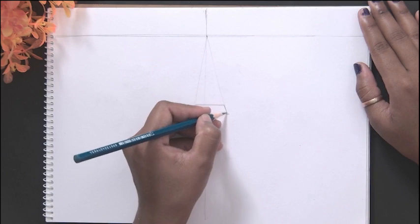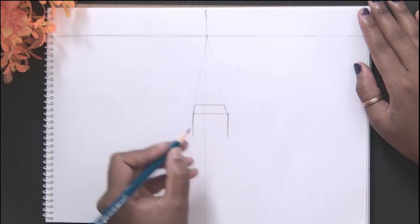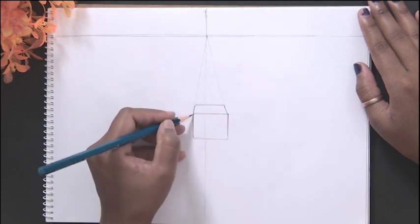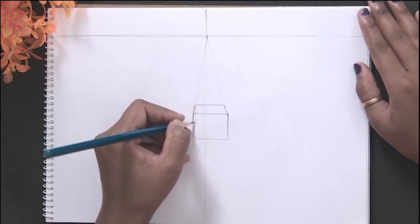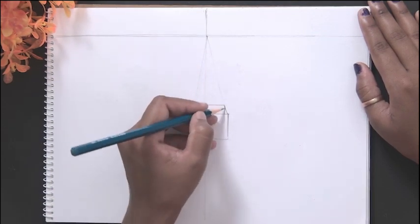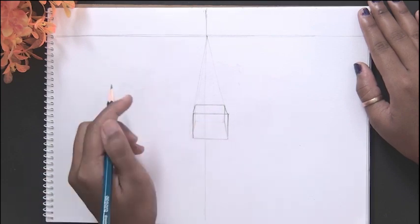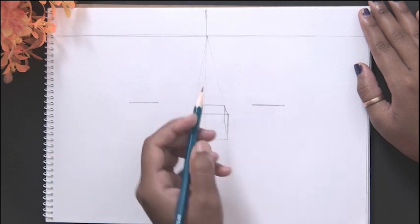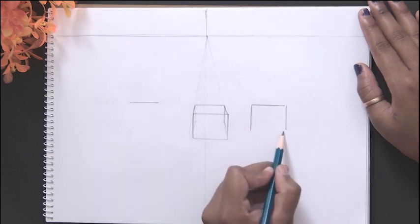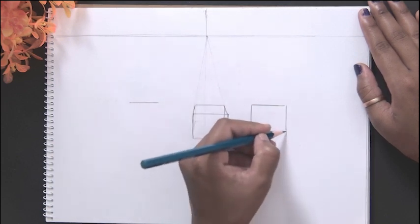Next, with the help of these deviating lines, you will see the intersection where a point is created, which we call the vanishing point. With the help of the vanishing point, I am creating a cube. In the same parallel way, I am creating cubes in different positions and angles.